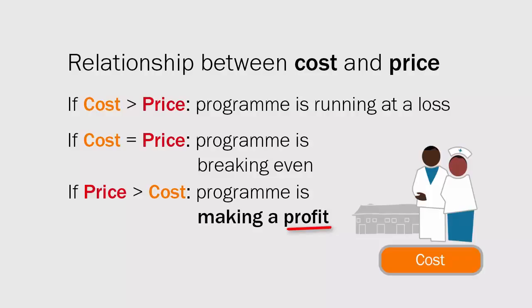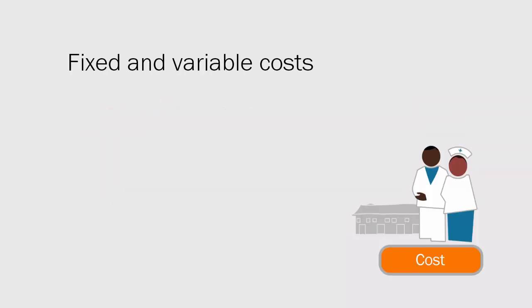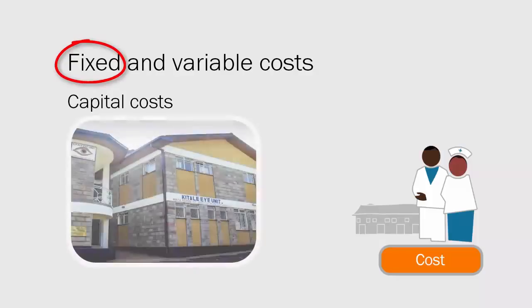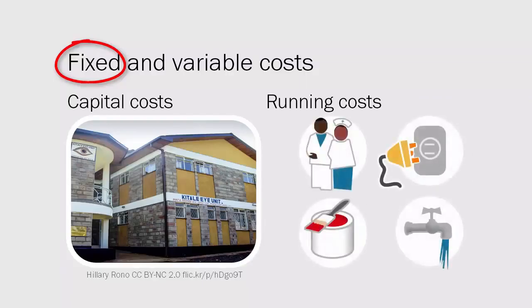If cost is equal to price, the program has a chance to carry on and break even. Over the long term though, it will be difficult to invest in and expand services, and additional funds will need to be found. The system will not be responsive to any shocks or difficulties, for example a natural disaster. If price is greater than cost then there is a profit, and there are varied margins of profit depending on the setting and the wealth of the population.